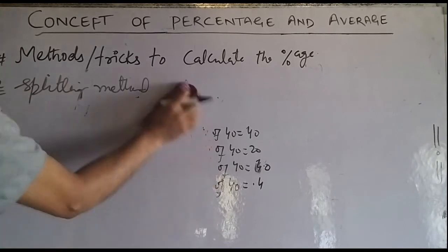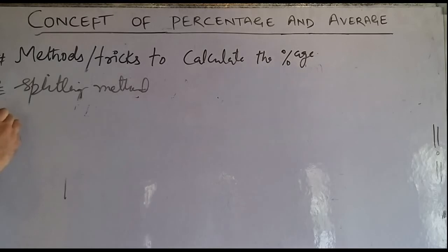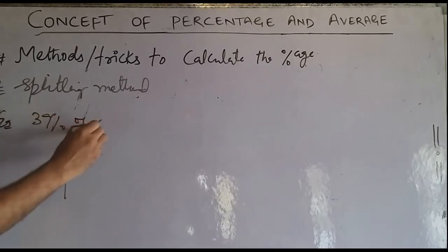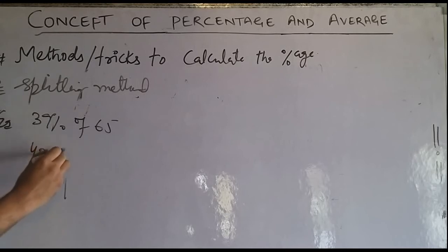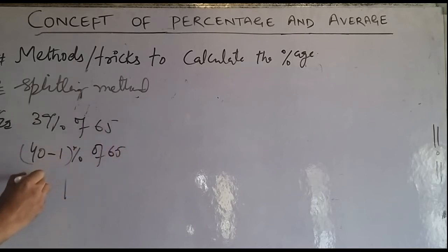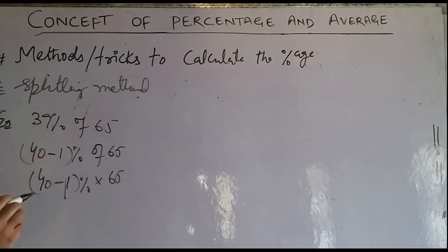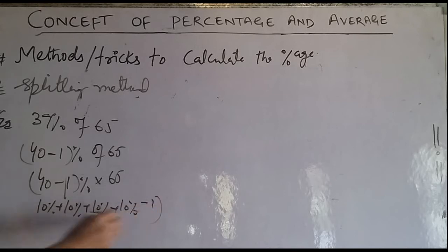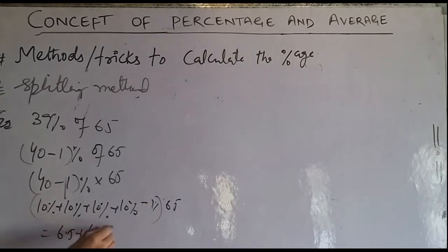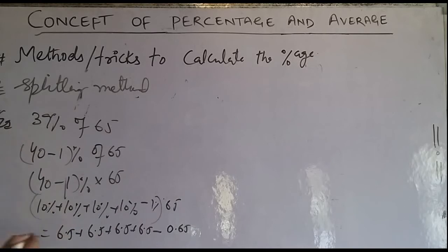Now for the questions. For example, 39% of 65. Split as 40 minus 1 percent of 65. 40% of 65 is 4 × 10% = 4 × 6.5 = 26. Minus 1% of 65 = 0.65. The result is 26 minus 0.65 = 25.35.